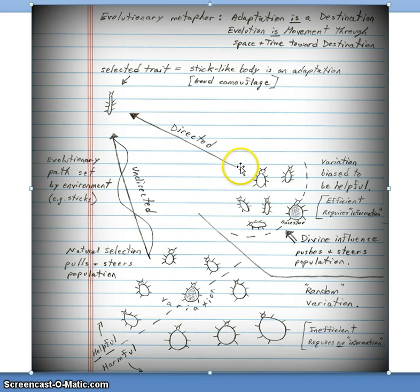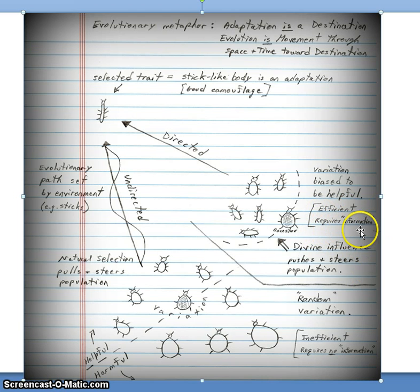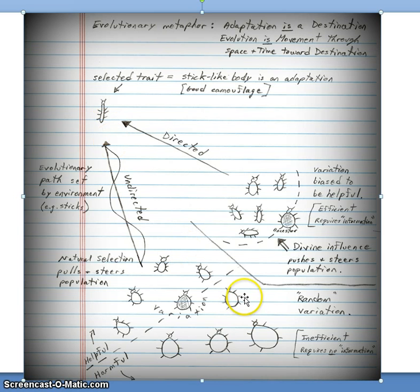There are a couple of notes to pay attention to. In the religious version of the story, we have two notes: efficient and requires information. This process is efficient because there are no individuals that are worse adapted than the parent. In the Darwinian population, the note is inefficient and requires no information. This process is inefficient because some of these insects are just going to be food for the predators — they are wasted in terms of the evolution of this population towards better adapted individuals. In the religious scenario, only better-adapted individuals are created; in the natural selection scenario, both better and worse individuals are created each generation.